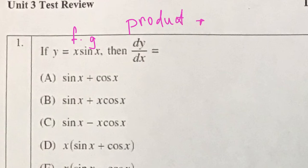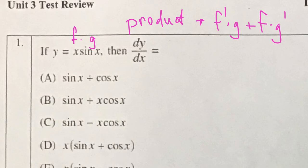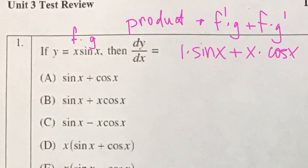The product rule says: take the derivative of the first thing times the second, plus the first times the derivative of the second — f prime g plus f g prime. Scanning our answer choices for sine x and x cosine x, we find the answer is B.